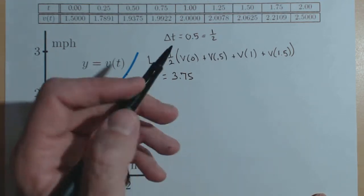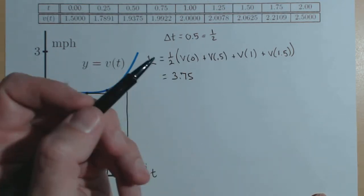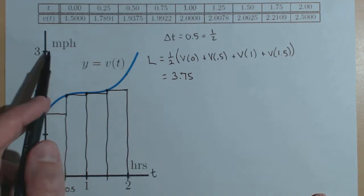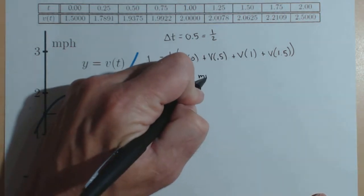The units on that 3.75 are whatever our distance is measured in, miles or feet. Notice we were in miles per hour, so this is 3.75 miles.